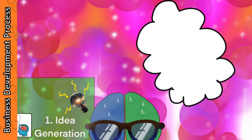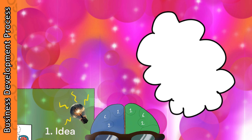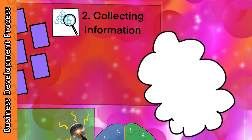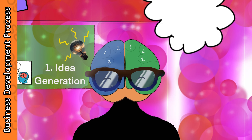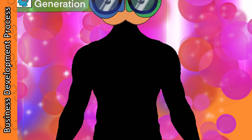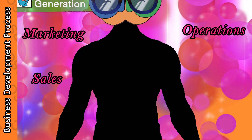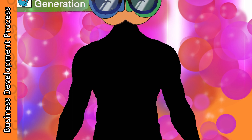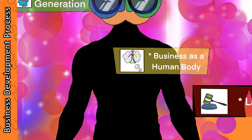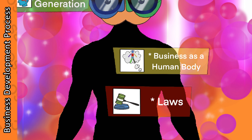Once an idea is generated and nurtured, we must validate the feasibility of our idea in our second step called collecting information. The information that we collect from this stage will be used to design the body of our organization. Usually the business body has sales, marketing, operations, production, etc. as its body parts. Hence, to make sure that we do a good job in developing the business body like a human body, we must understand two concepts called business as a human body and laws governing organization and sustainability.